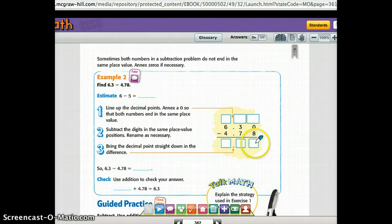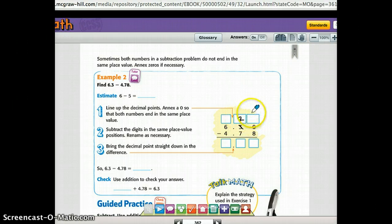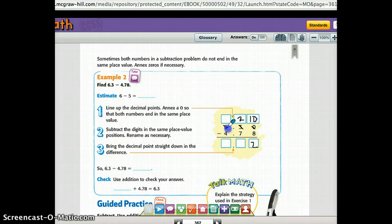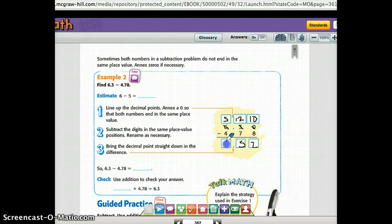So I'm going to start at the very right again. 0 minus 8. I can't do that. So I need to regroup. So my 3 becomes a 2. And I'm taking that 10. Because remember, each place value is 10 times more. So this 0 becomes a 10. Now I have 10 minus 8, which is 2. And now I have 2 minus 7. Oh, I have to regroup again. So my 6 becomes a 5. And I'm taking a 10 away. So now this becomes a 12. So 12 minus 7 is 5. 5 minus 4 is 1. And I bring my decimal straight down. So the difference is 1 and 52 hundredths.